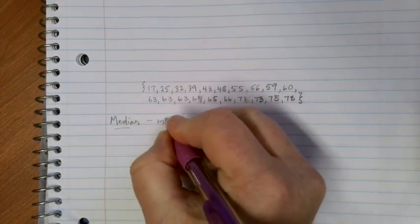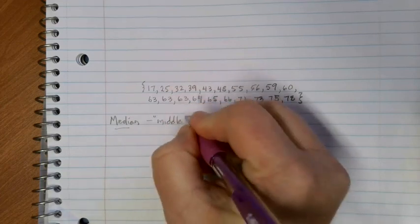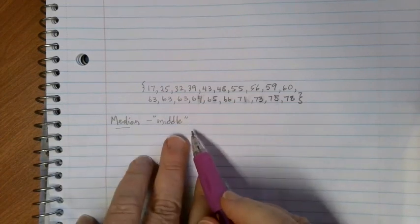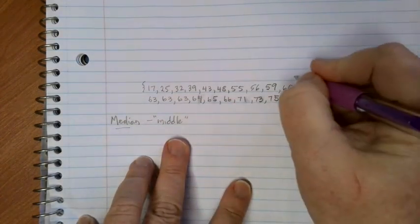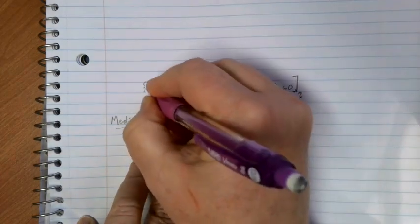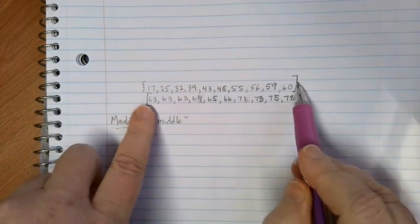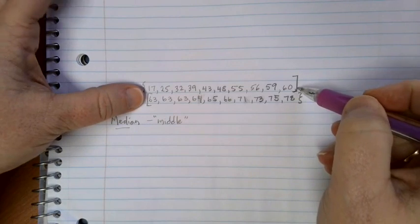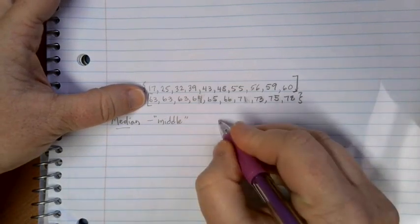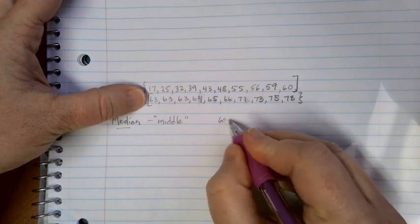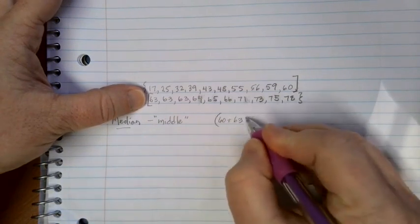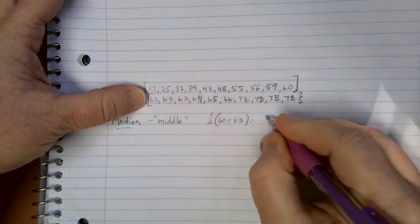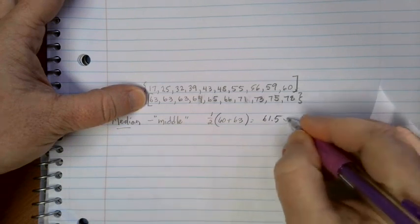Now if I want to calculate the median, this is the middle value. To remember this, I think of the middle of the road being called the median. So if I'm looking for the middle value here, there's 20 different numbers, so the median is going to lie in between. We have 10 numbers below, 10 numbers above, so the median is going to be that halfway point in between these two places. In this case I'm looking at what's halfway between 60 and 63, and I would get 61.5 years old as the median.